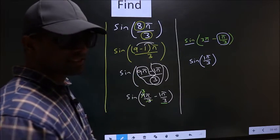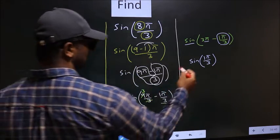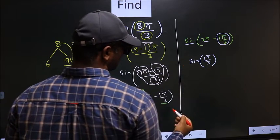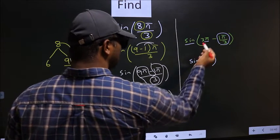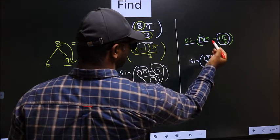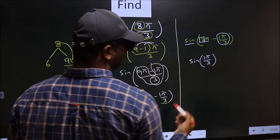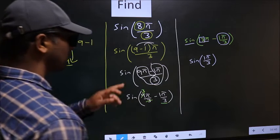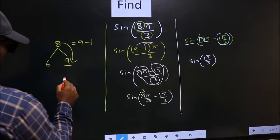Now the question arises: will it be positive here or negative? To decide that, you look here. Here we have multiple of π is 3, which is odd. Whenever you have odd multiple of π, the angle has to lie either in 2nd or 3rd.